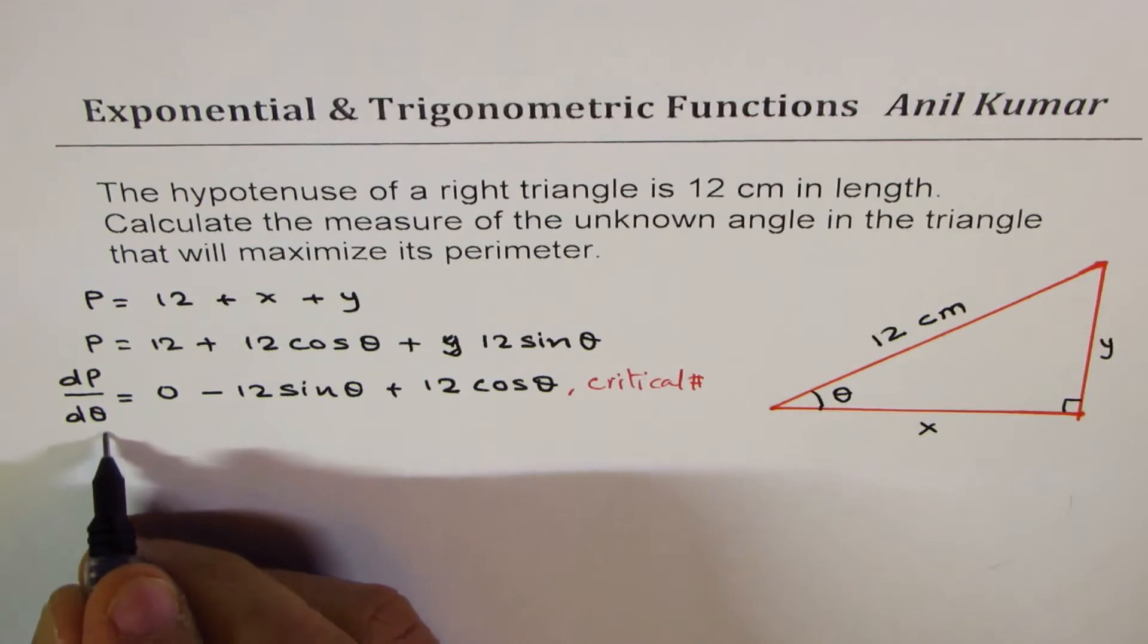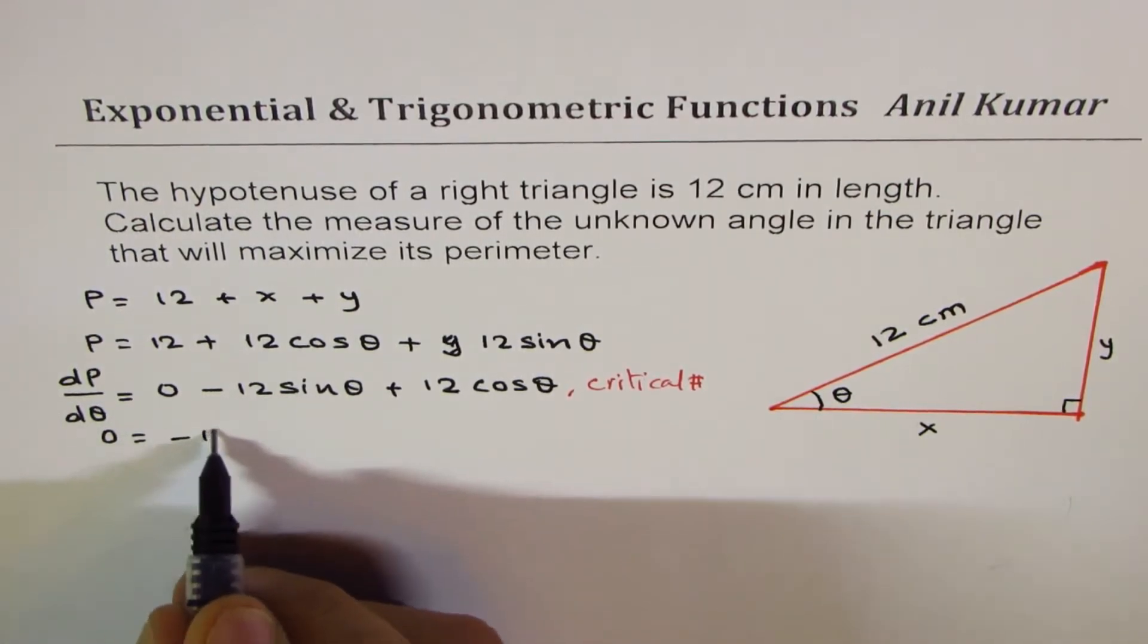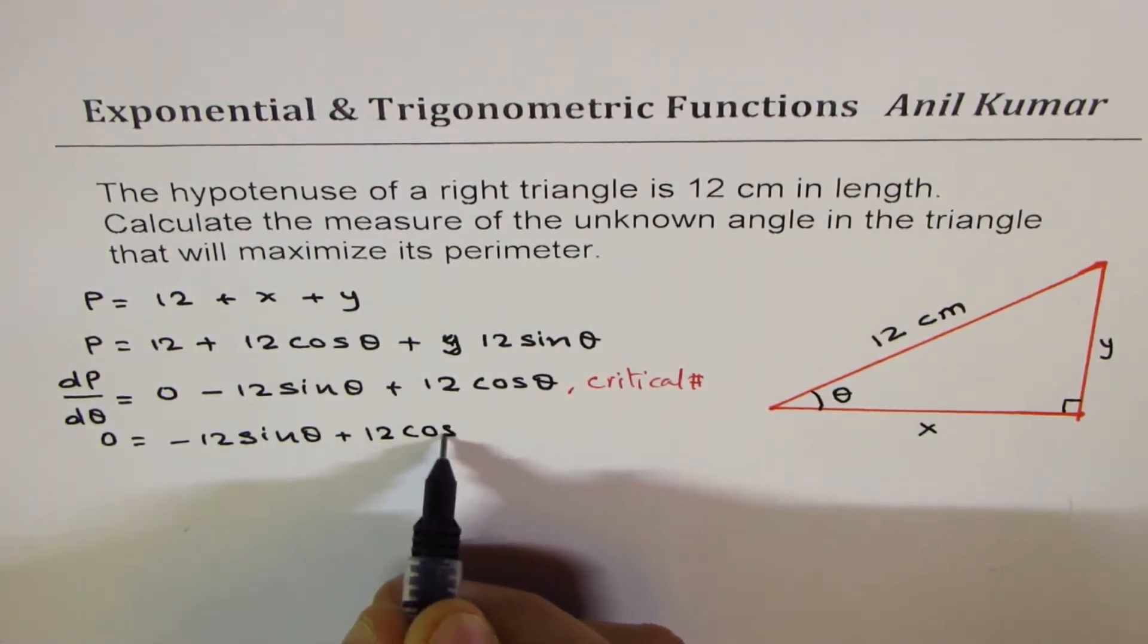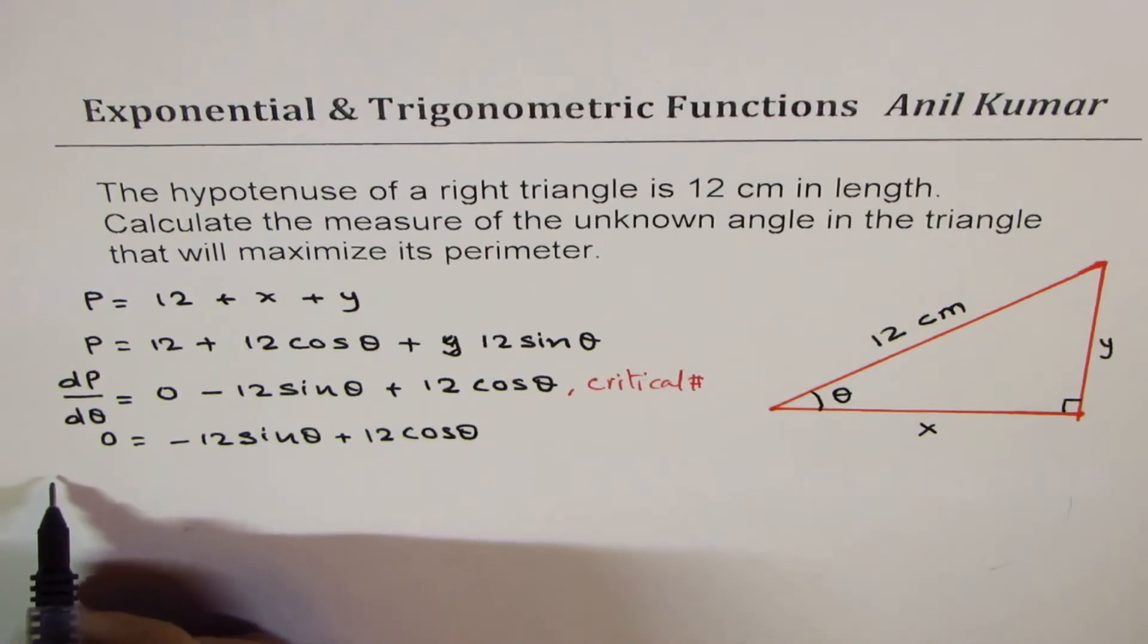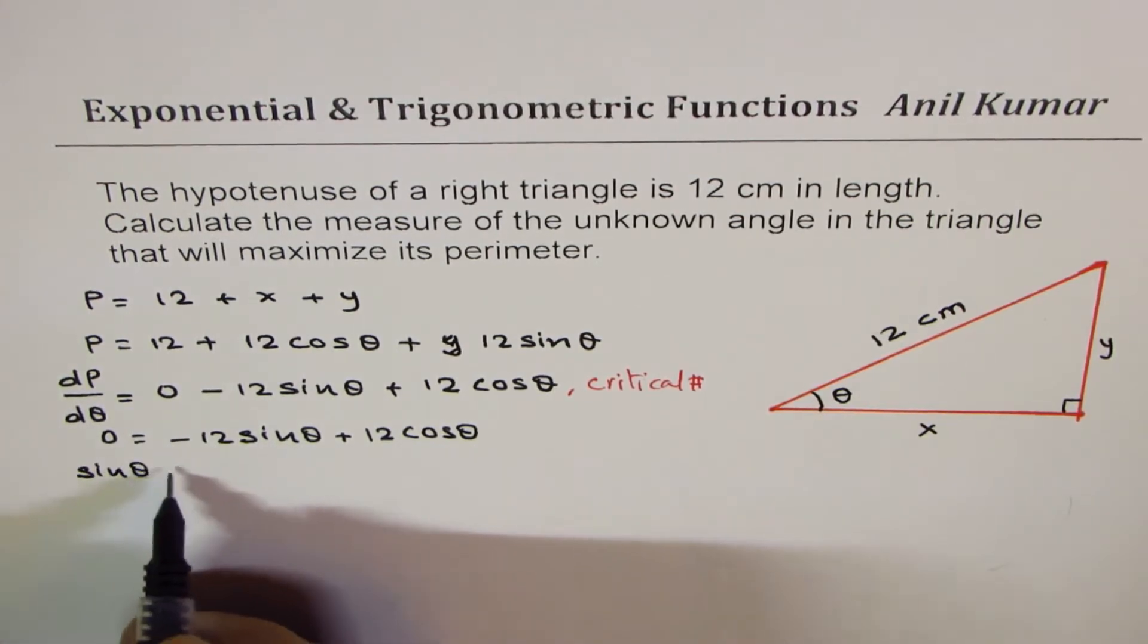So that means 0 is equal to, we have minus 12 sin θ plus 12 cosine θ. Bringing terms to the left, canceling 12, we get sin θ equals to cosine θ.